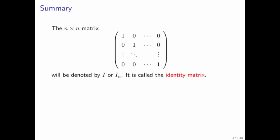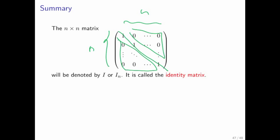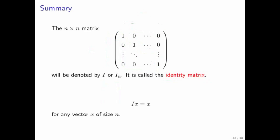In summary, the n by n matrix that has ones on the diagonal and zeros everywhere else is denoted by I, because it's the identity matrix. If it's not clear from context what its size is, we call it I sub n. Any time you do I times x, you simply get x back, because it's the identity matrix — it corresponds to the linear transformation that leaves the vector alone.